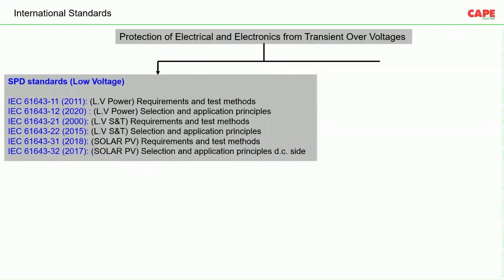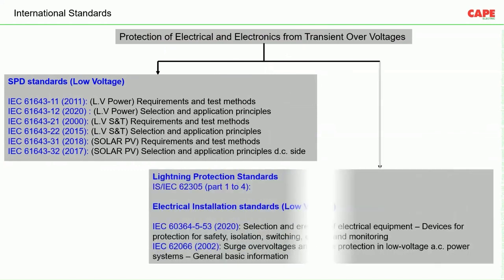First, we are going to discuss the various international standards available for SPDs. These include IEC 61643 Part 11 (2011), which explains requirements and test methods of an SPD; Part 12, which covers selection and application principles; Part 21, which discusses requirements and test methods for signal and telecom SPDs; and Part 31, which covers solar PV SPDs. The first two standards — Part 11 and Part 12 — have been accepted by India as IS 16463 Part 11 and Part 12.